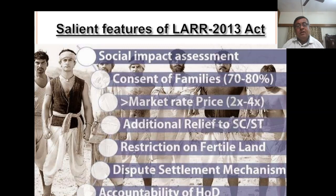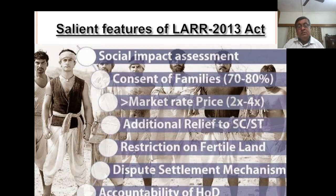Salient features include: Social Impact Assessment, consent of families at 70–80%, greater market rate compensation of 2 to 4 times, additional relief to SC/ST, restriction on fertile land, dispute resettlement mechanism, and accountability of each.